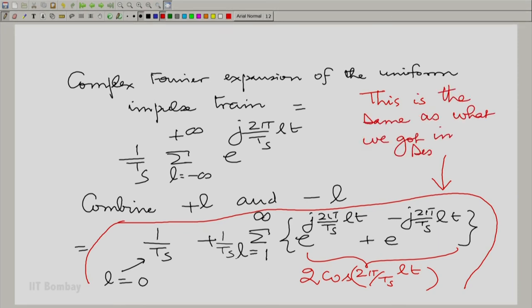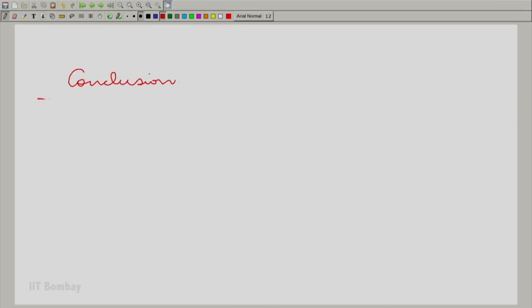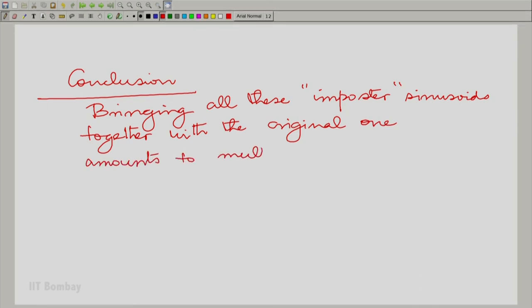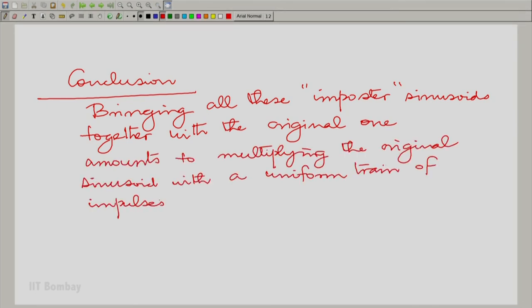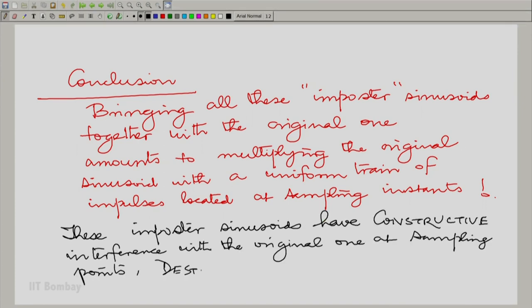Let us mark it prominently. This is the same as what we got in session 7. And what conclusion we draw here? Bringing all these impostor sinusoids together with the original one amounts to multiplying the original sinusoids with a uniform train of impulses located at the sampling instance. In fact, what it also says is these impostor sinusoids have a constructive interference at the points of sampling and destructive elsewhere. An important conclusion. We have more to do with this in the next session. Thank you.